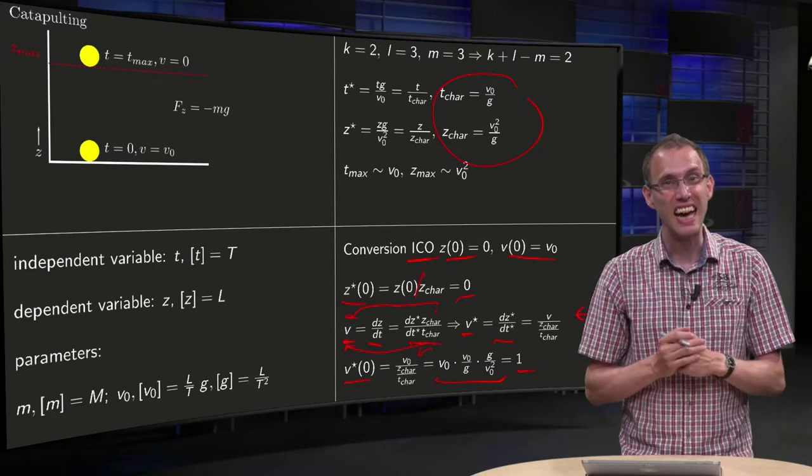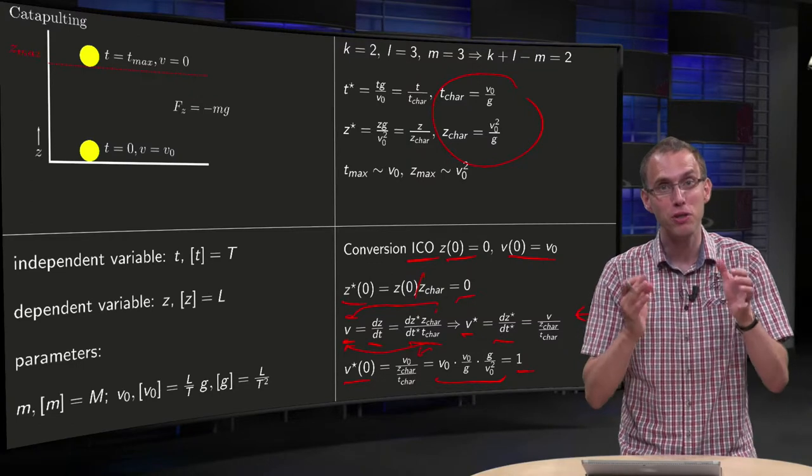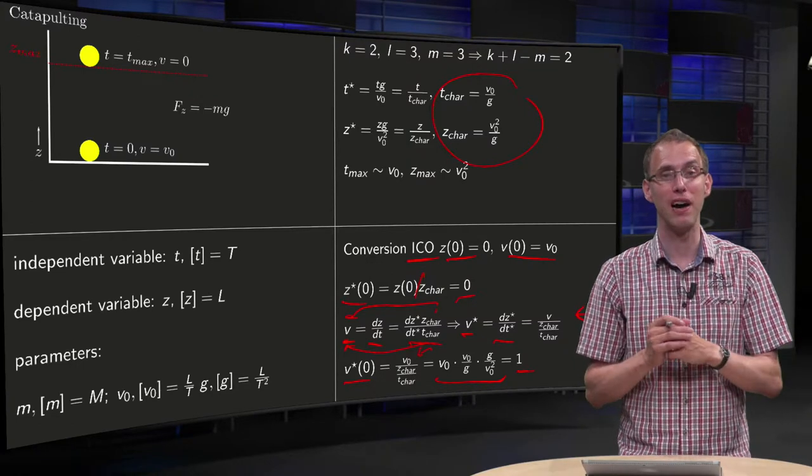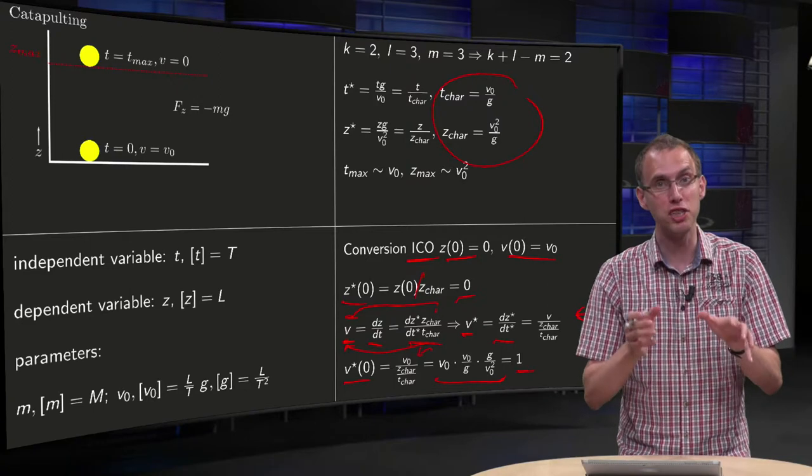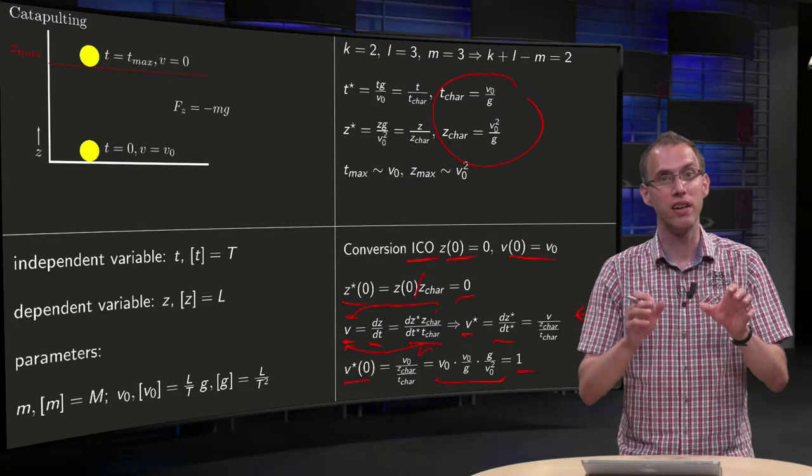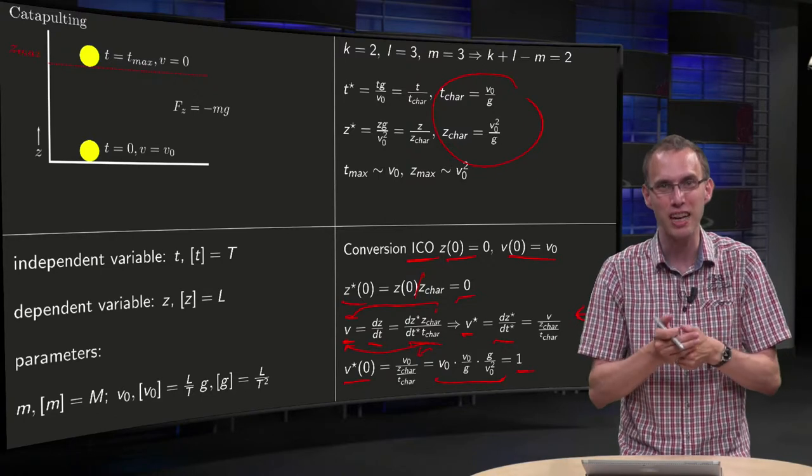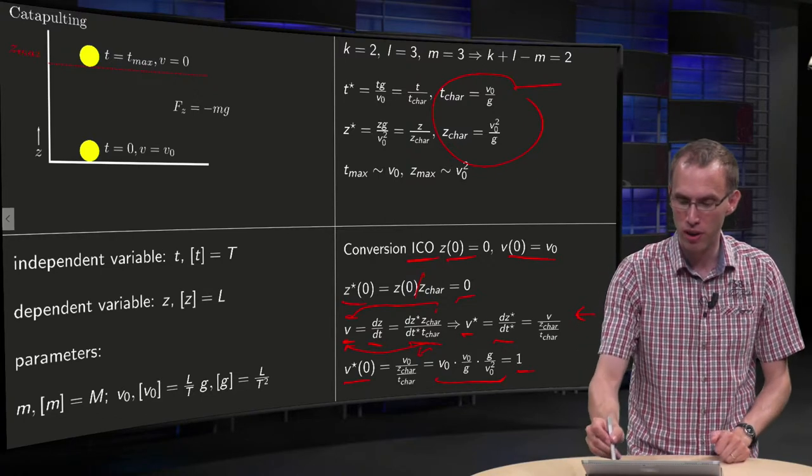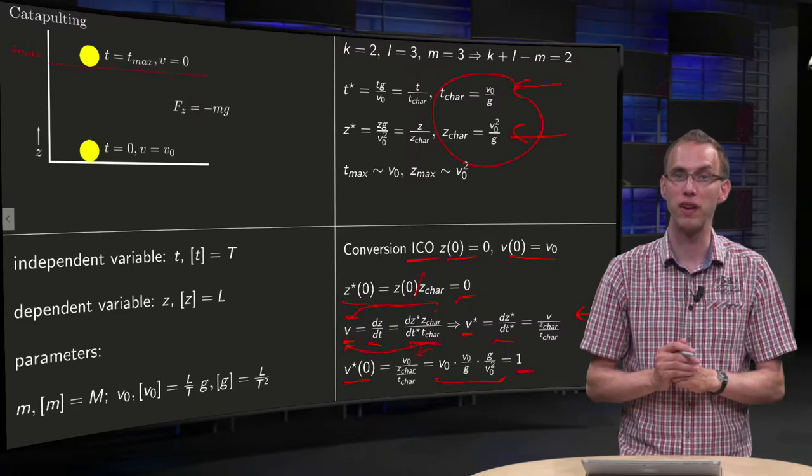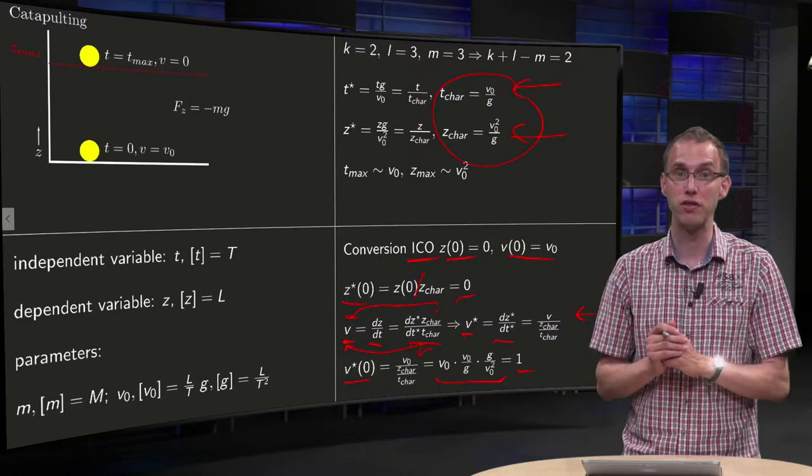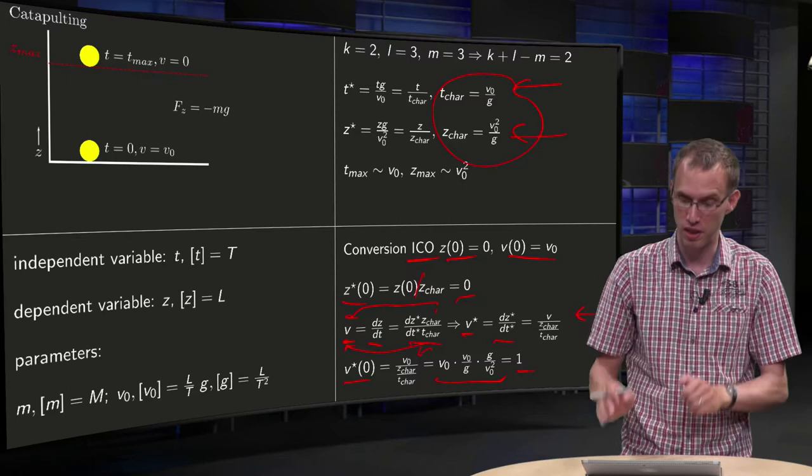And that's exactly also one of the points of using dimensionless variables. You want to simplify the equations a bit by moving information about the size of the parameters into your characteristic scales. So we get v* of 0 equals 1, whereas v of 0 was v0.